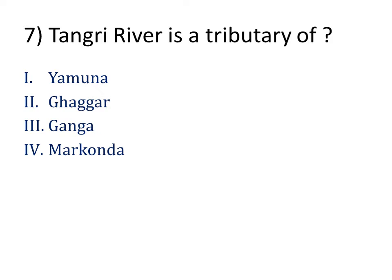Tungri River is a tributary of? Our answer is Gagar. The Tungri River, also called the Dungri River, which originates in the Shivalik Hills, is a tributary of the Gagar River in the Haryana state of India.